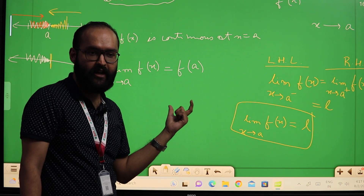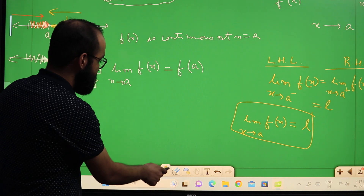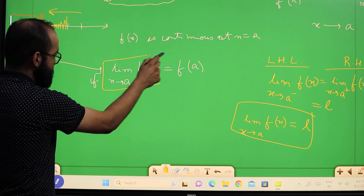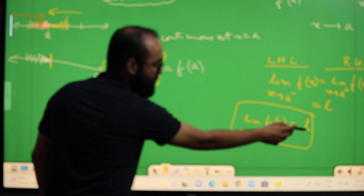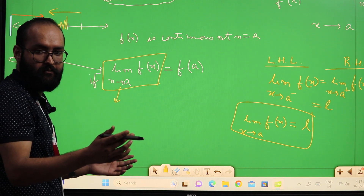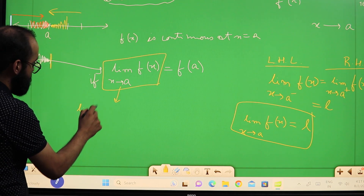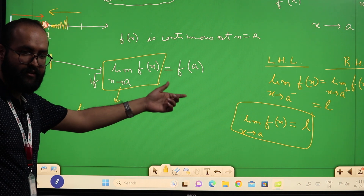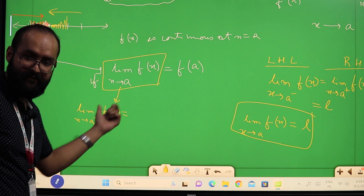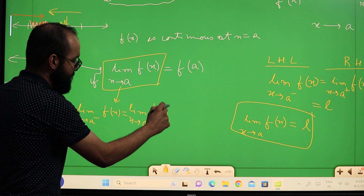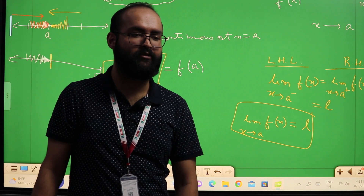This same definition we can also write in another way — the expanded form. From the definition of limit, we know that the limit value of f(x) at x equal to A is equal to the left-hand limit and the right-hand limit. The limit of f(x) exists at x equal to A if the left-hand limit equals the right-hand limit.